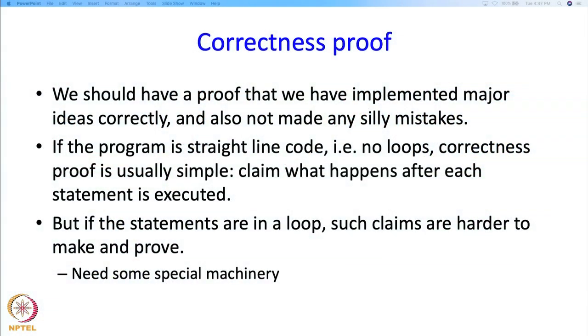A correctness proof does two things: it says that we have implemented the major ideas correctly — that is, we have implemented Euclid's theorem correctly — and that we have not made any silly mistakes. If the program is just one statement after another without any loops, we can visually check. But loops really confuse the issues, because we have to ask what happened in the previous iteration and the one before that. So we need to make precise statements about what happens in each iteration, and we need some special machinery for it.